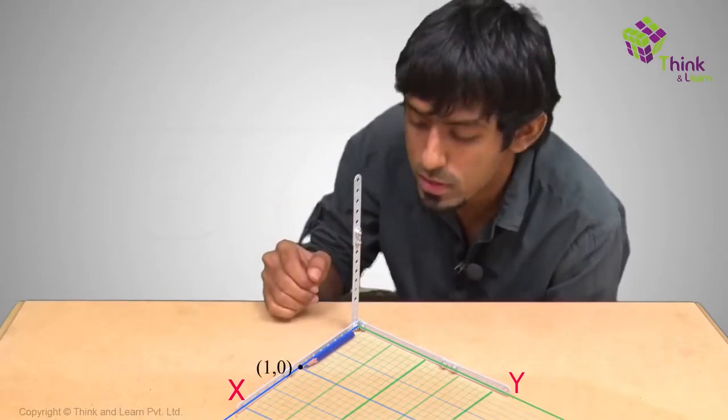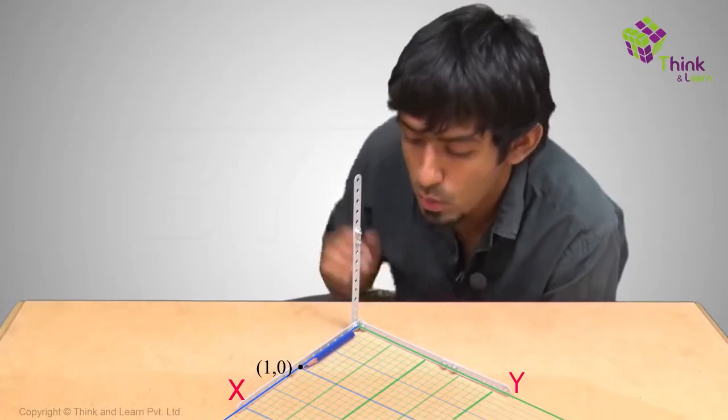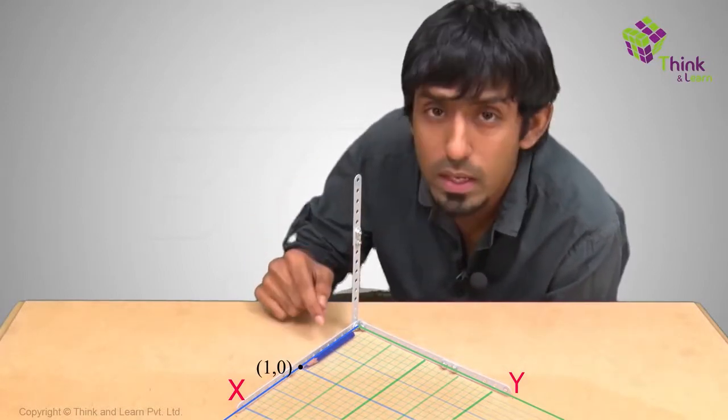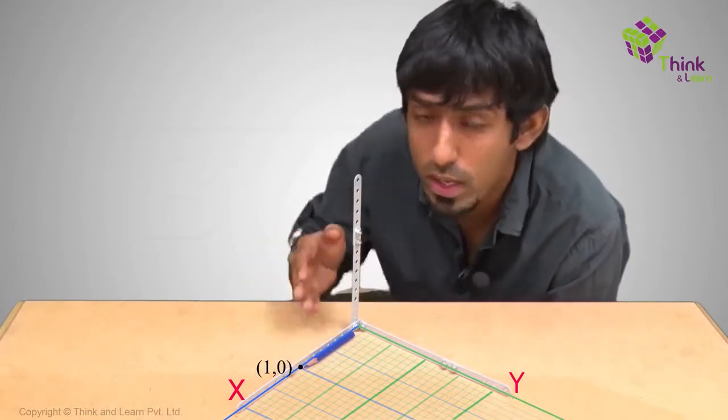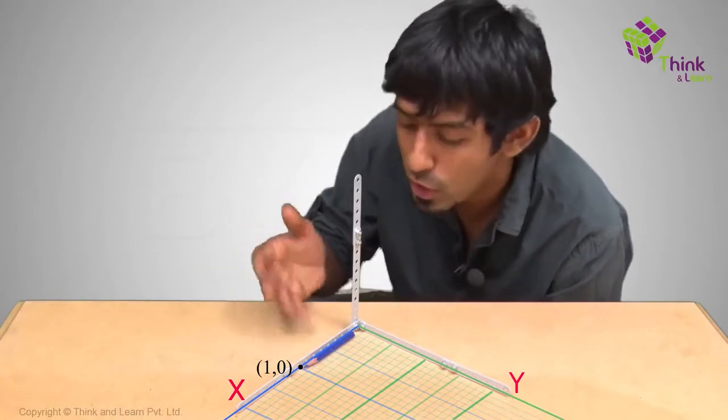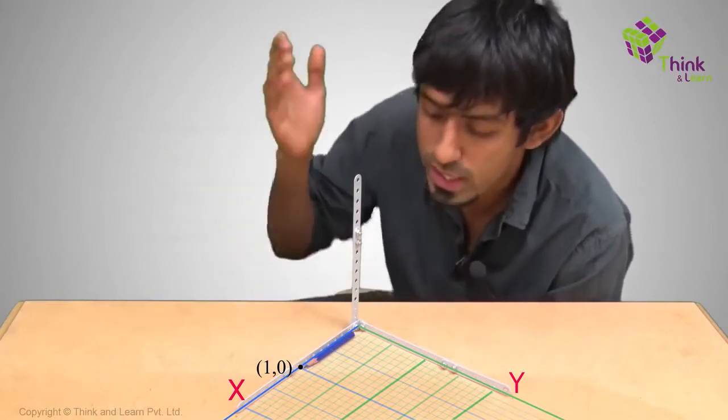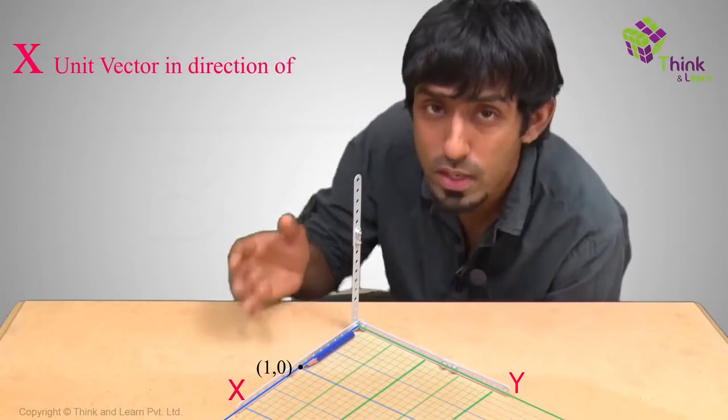So if I want to refer to 1, 0, I can refer to it as 1 into my vector, unit vector along x direction. I want to give it a name, so I'll call it x cap, just to say it's the unit vector pointing in the direction of x itself.